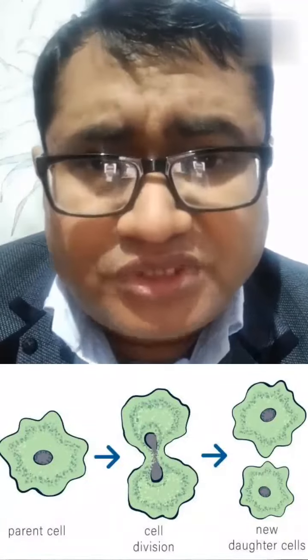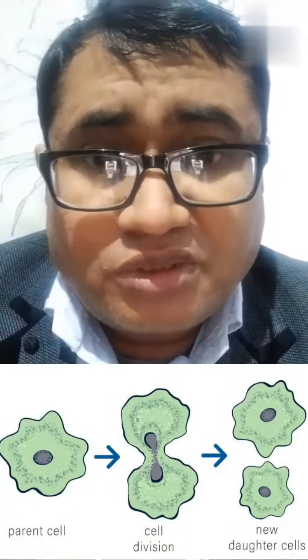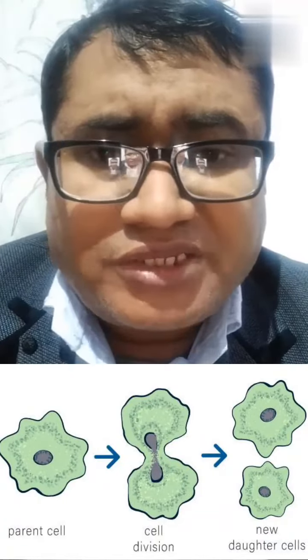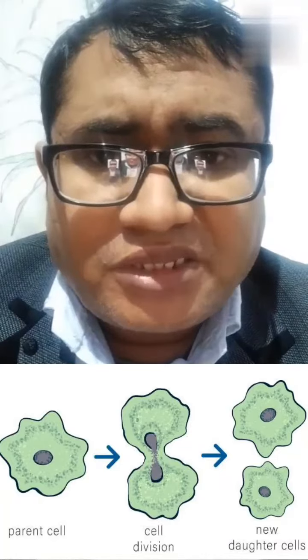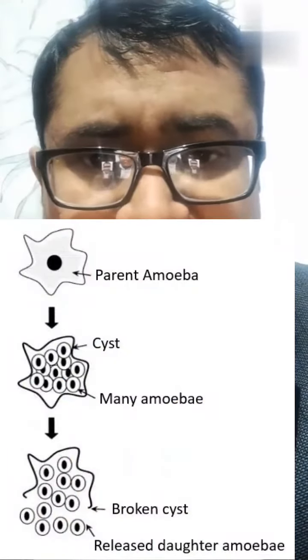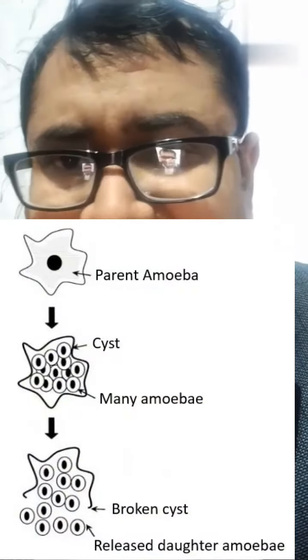Fission is a type of asexual reproduction in which one organism splits into two or more organisms. Fission takes place in protozoa and some bacteria. Fission is of two types: binary fission and multiple fission.